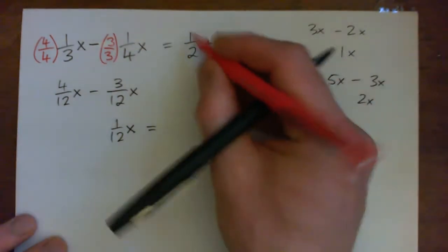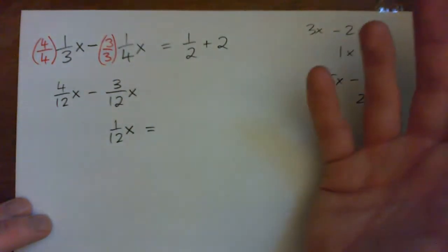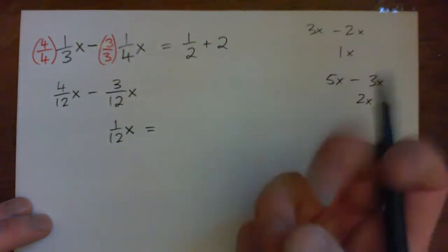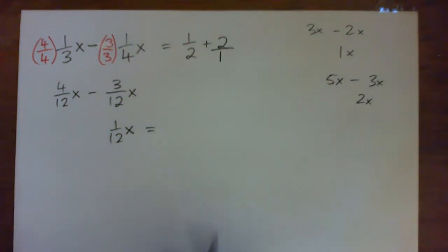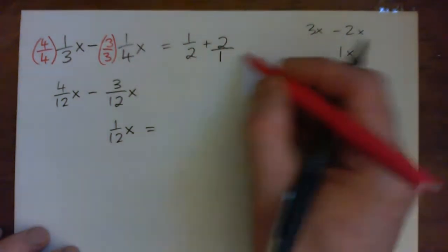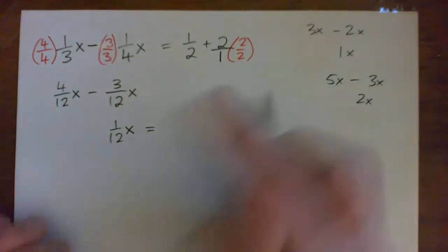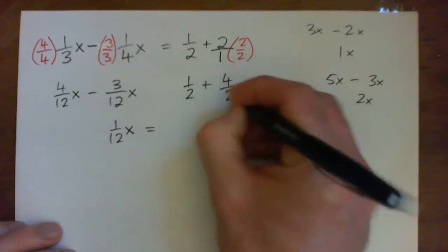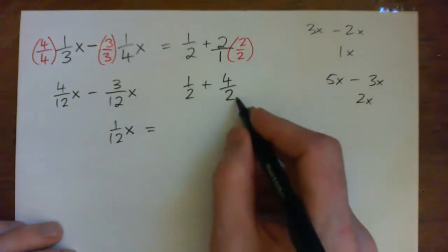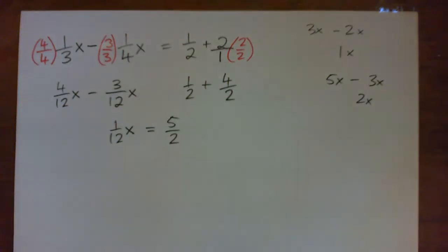On the right you're adding a half plus two. It might be nice to turn that into just one number like a mixed number. Put the two over one and make a common denominator, times that by two over two, so that we have one half plus four halves.